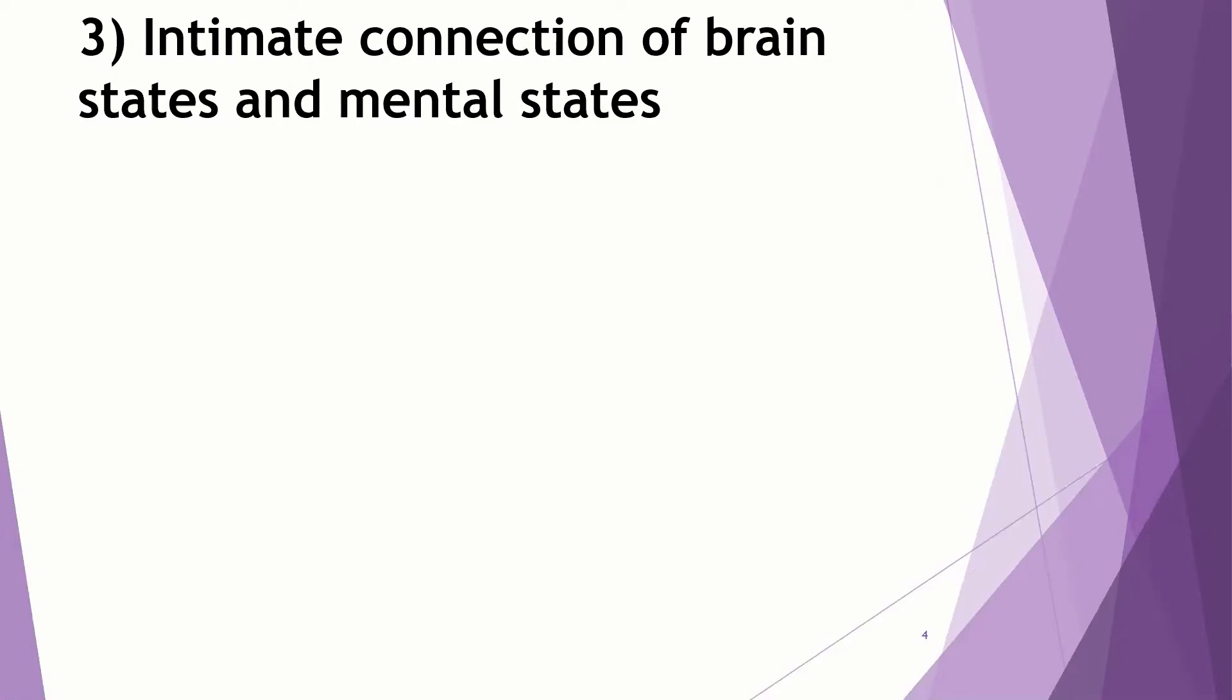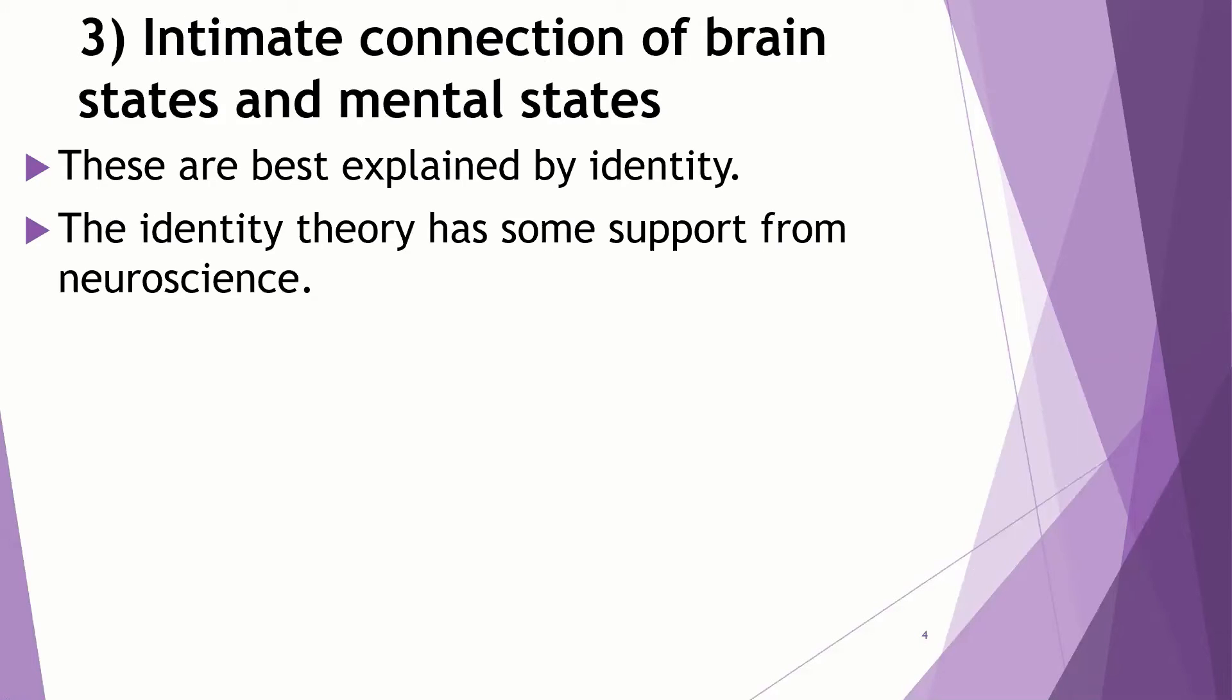Third, and this is a very significant argument here, is relying on that intimate connection of brain states and mental states. This would be a kind of an argument by the best explanation, that this intimate connection is best explained by identity. We'll have the main argument, we'll summarize all these things into a main argument in just a moment. The idea is that the identity theory has some support from neuroscience.